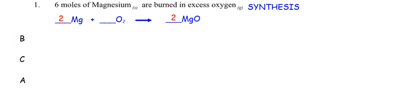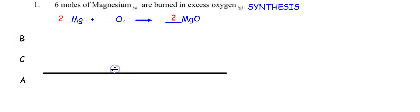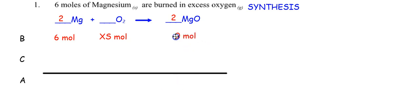I need a BCA table with a line. What do I know? I have six moles of magnesium — that's where the six goes. I have excess oxygen, and how many moles of magnesium oxide do I start with? Zero moles of product — don't forget that. Which one gets used up first? The magnesium, because I have tons of oxygen. So I'm going to subtract six moles of magnesium and use up all my magnesium.